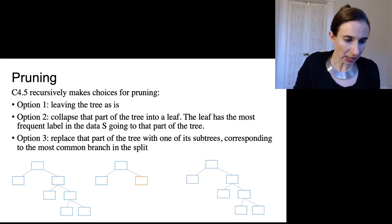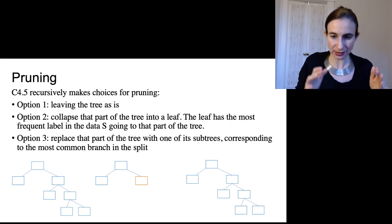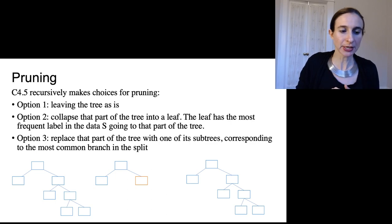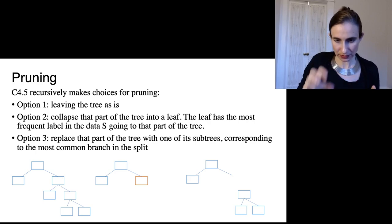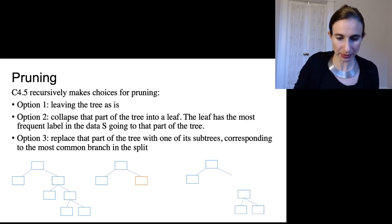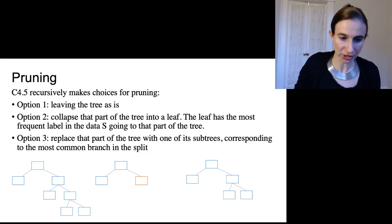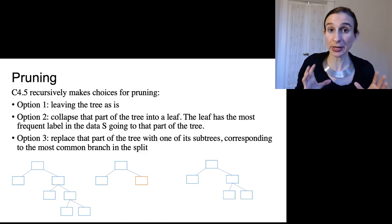And then the third option is to replace the whole, a whole part of the tree with one of the subtrees corresponding to the most common branch in the split. So in other words, I'm taking that part of the tree that I had, I'm replacing it with a subtree that happened to be the most common branch in that direction. Okay, so those are the three options.